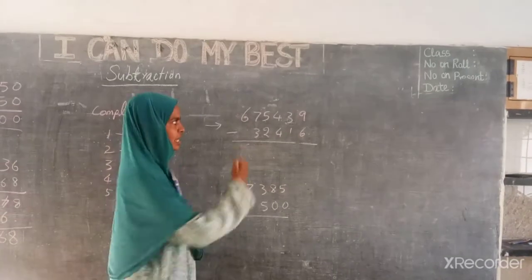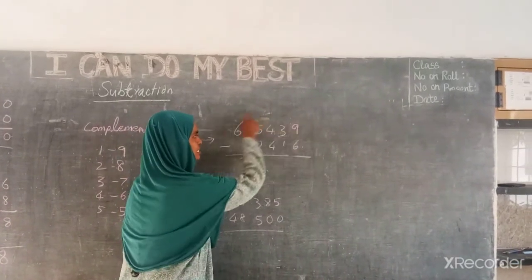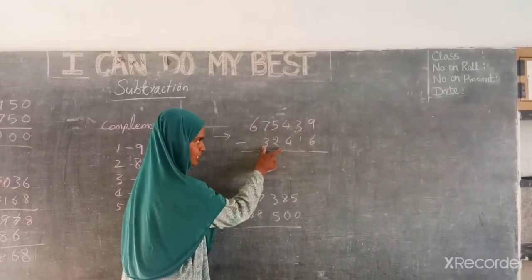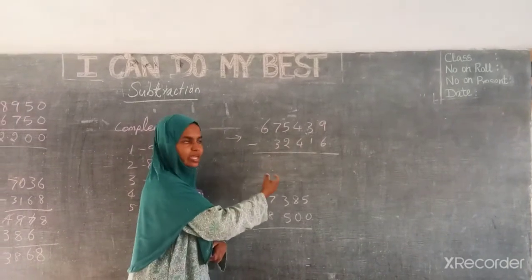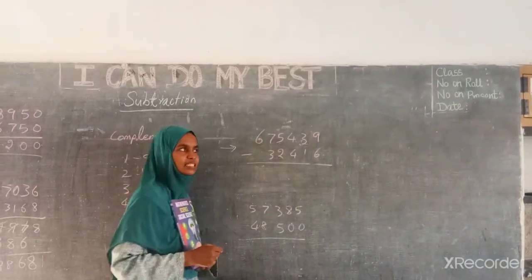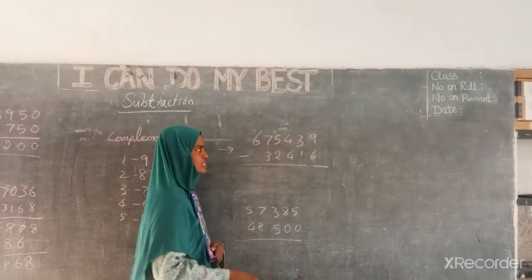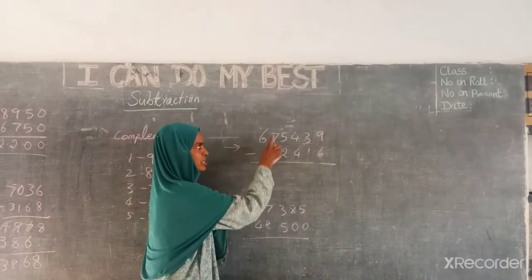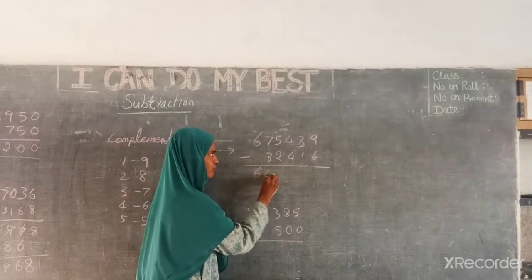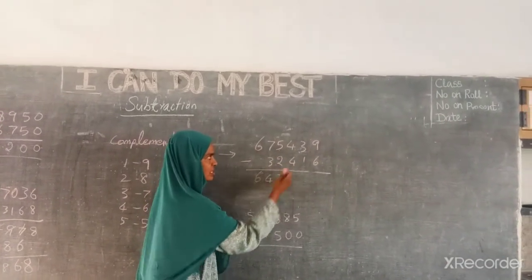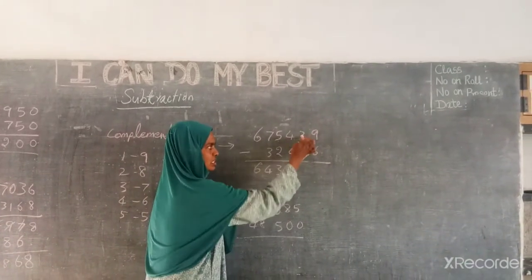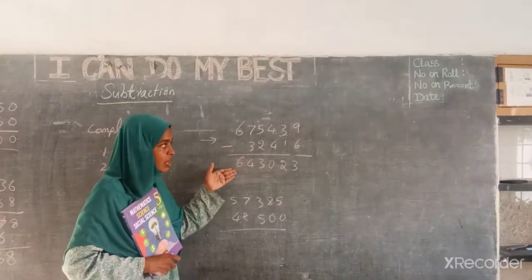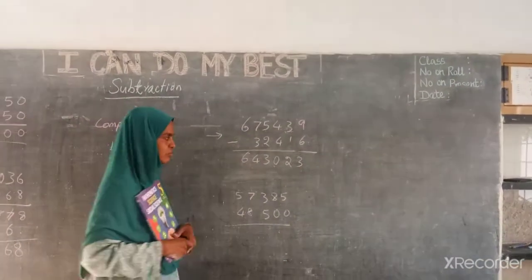Now we will go to the higher zone. Let us name this numeral: 6,75,439. And this numeral: 32,416. I am going to subtract 32,416 from 6,75,439. Starting from the left: 6 — nothing to subtract, so same 6. 7 minus 3 is 4. 5 minus 2 is 3. 4 minus 4 is 0. 3 minus 1 is 2. 5 minus 3 is 2. See how big a number this is, and in a fraction of a second you have done it — actually very simple.